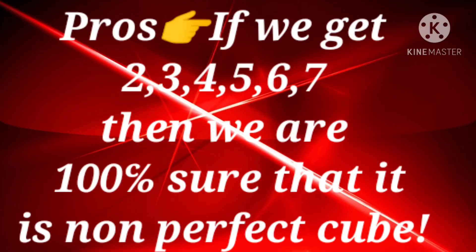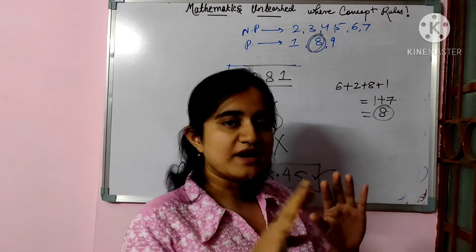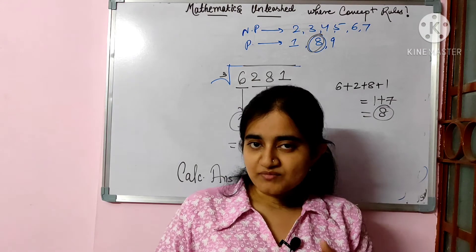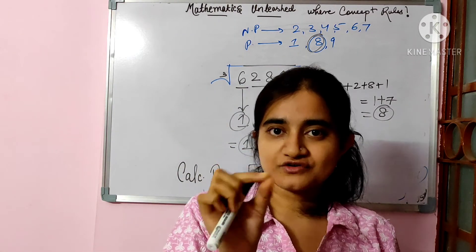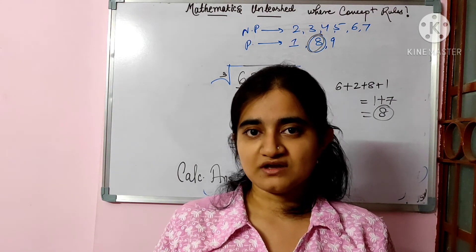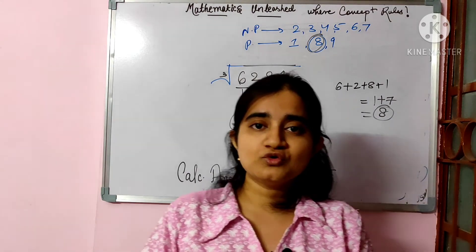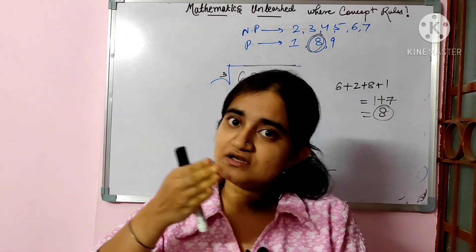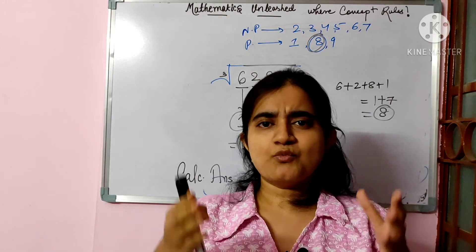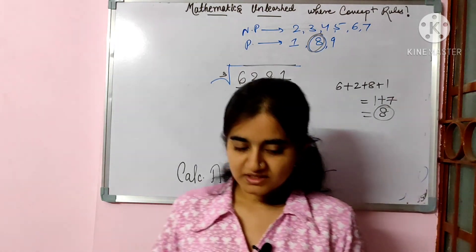Agar digital sum method se aapka 2 se 7 aa gaya, toh ek fayda hai — blindly use non-perfect maanke, non-perfect ka koi method lo aur solve kar do. Mein apne next video mein ek aisa short trick laane wali hoon cube root ka — jo internet pe available toh hai lekin incomplete hai. Us video mein complete aur depth mein knowledge milegi, aur nearest answer milega. Kam se kam 50 to 100 questions solve karke dikhaungi. Thank you everyone, do subscribe the channel.